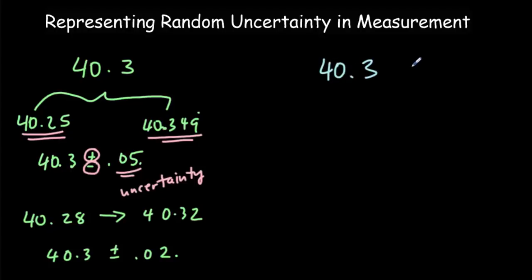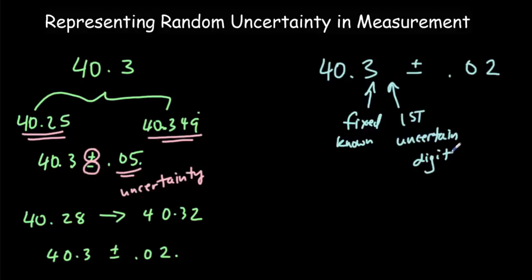There's also another advantage to this notation. If I write 40.3 plus or minus 0.02, then when I start adding and subtracting off the uncertainty, because there's a 0 in this decimal place, I can't change that digit. So this digit here is fixed. It's known. And it's in this second decimal place here that I'll be making changes. So it's really this second digit that is your first uncertain digit.